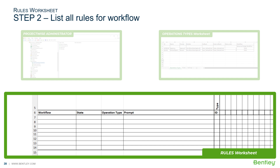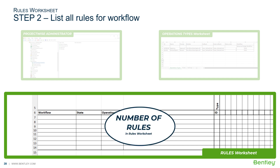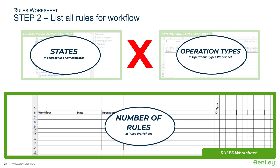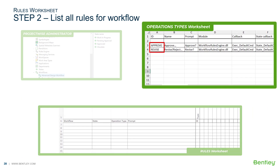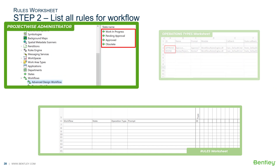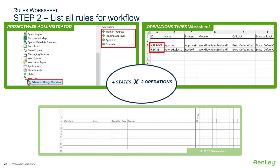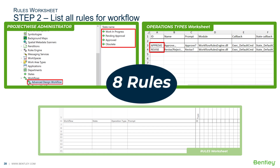Also, rotate the text in rows one through five so that the columns can be narrow. Next, determine how many rules you have for the workflow. The number of rules will be the number of states times the number of operations. In this case, we have two operations defined on the operations types worksheet: Approve and Revise. Previously, we defined four states in ProjectWise Administrator for the advanced design workflow: Work in Progress, Pending Approval, Approved, and Obsolete.